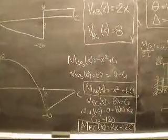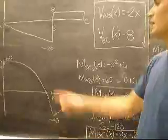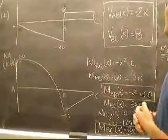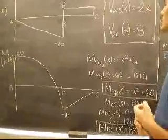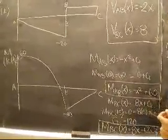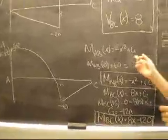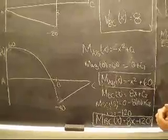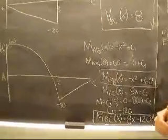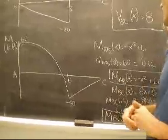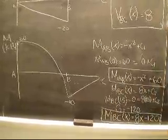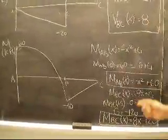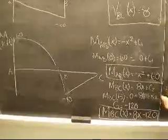In order to solve this problem we need to put these lines into equation form. The shear of x from A to B is negative 2x and the shear of x from B to C is 8. Our moment equation from A to B is negative x squared plus C1. In order to solve for C1 we use our known that the moment of AB at point A is 60, giving us our equation as such.